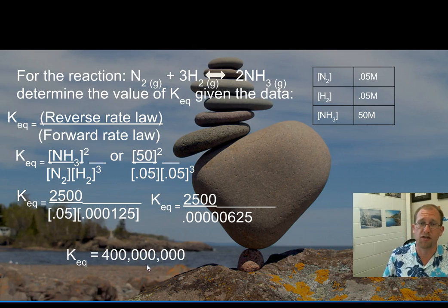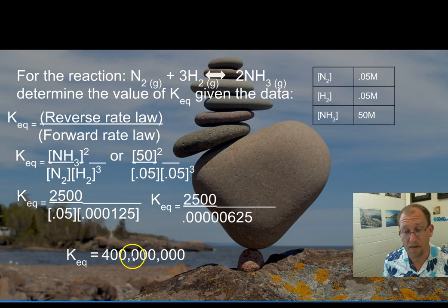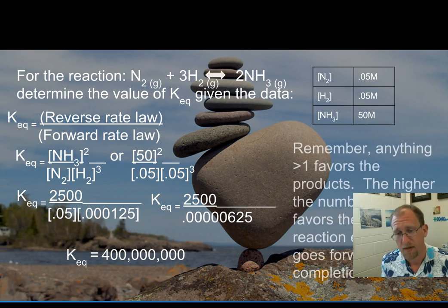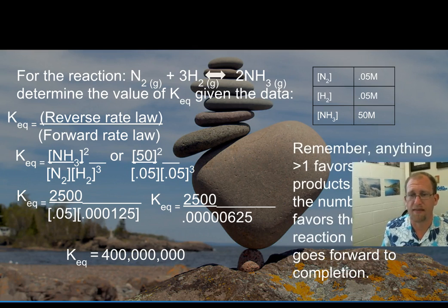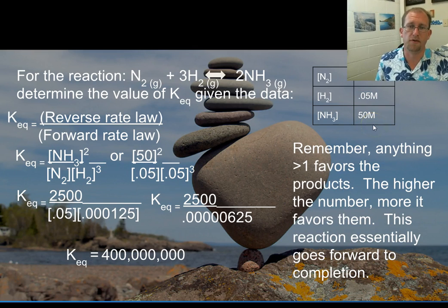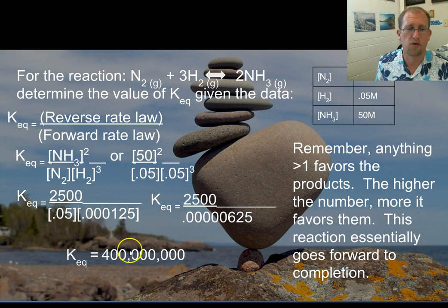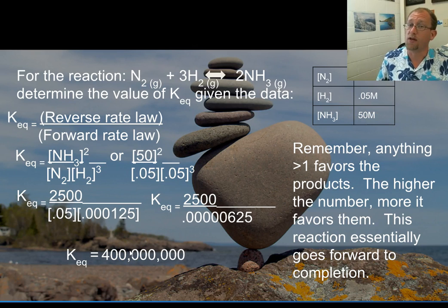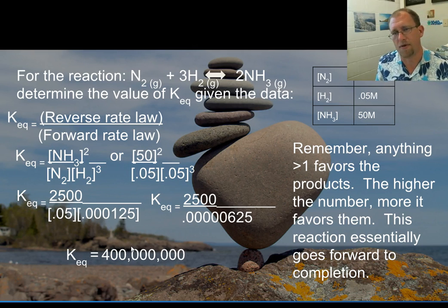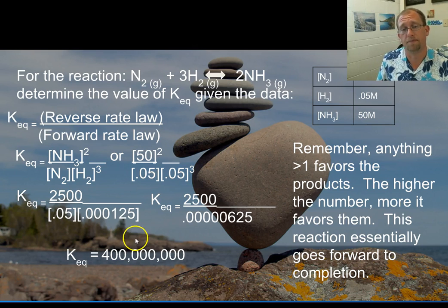Keq equals 400 million. The reaction constant at equilibrium is 400 million. Keep in mind that anything greater than 1 favors the forward reaction — 400 million is a whole lot more than 1. So it grossly favors the forward reaction, and the reverse reaction is only happening as a trickle. But it is at equilibrium.